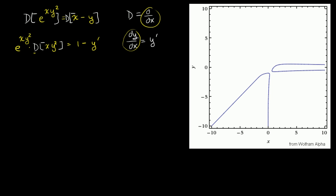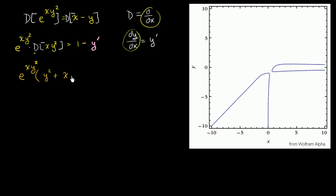Let me make all of my y primes — all of my derivatives of y with respect to x — pink so I can keep track of them. So this is going to be equal to e to the xy squared times the derivative of xy squared. Using the product rule: the derivative of x is 1, times y squared, plus x times the derivative of y squared with respect to x. That's the derivative of y squared with respect to y, which is 2y, times the derivative of y with respect to x, which we write as y prime.